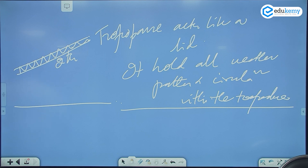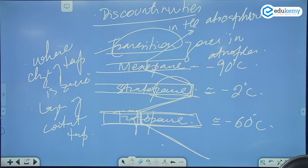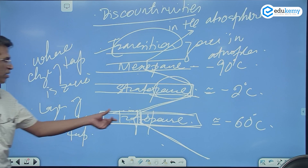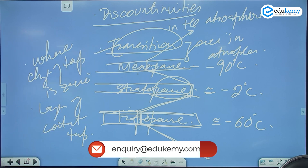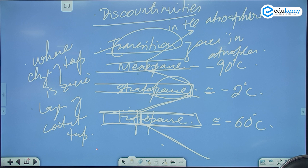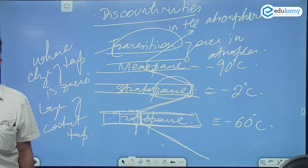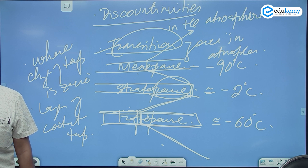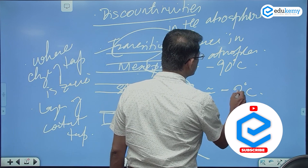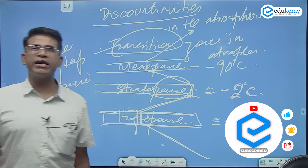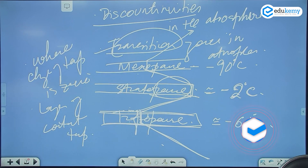Do remember the temperature of the mesopause — it is the coldest, approximately minus 90 degrees centigrade. Mesopause is the coldest. Tropopause, stratopause, mesopause — the tropopause holds all the weather and all circulations within the troposphere. The ELR concept we use only for the troposphere. The stratopause temperature is minus 2 degrees centigrade.